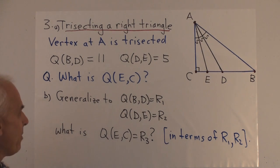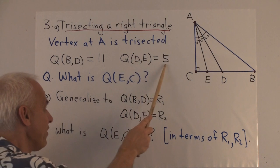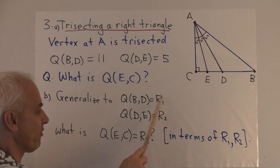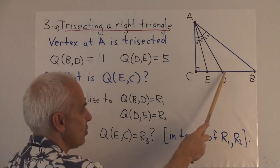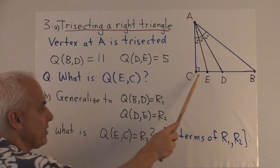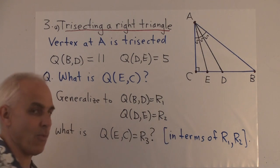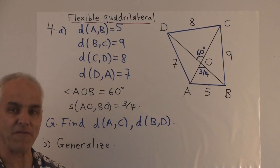And you can generalize that by not looking at 11 and 5, but rather looking at a general value R1 and R2 for these two quadrants, and then try to figure out this third quadrants in terms of R1 and R2.